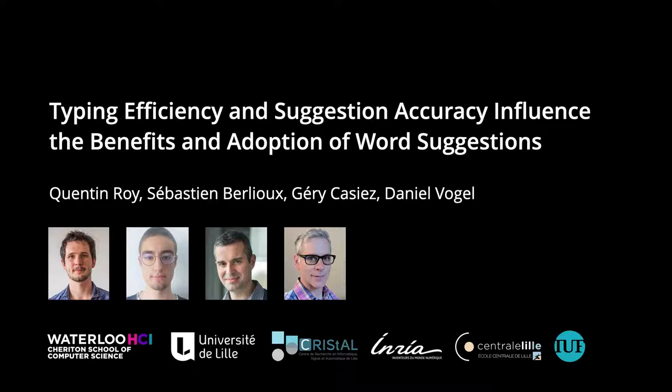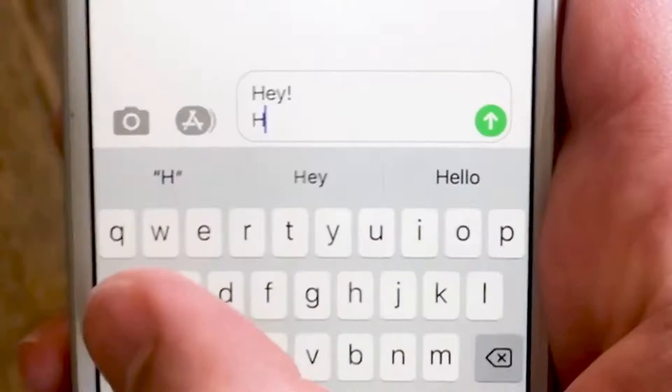My name is Quentin Roy and this work is a collaboration with Sébastien Berlieu, Géry Cazier and Daniel Vogel.